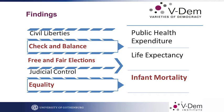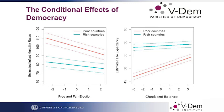In terms of life expectancy and infant mortality rates, we found that check and balance, parliamentary power, free and fair election, and equality — those dimensions all improve these important indicators of health.